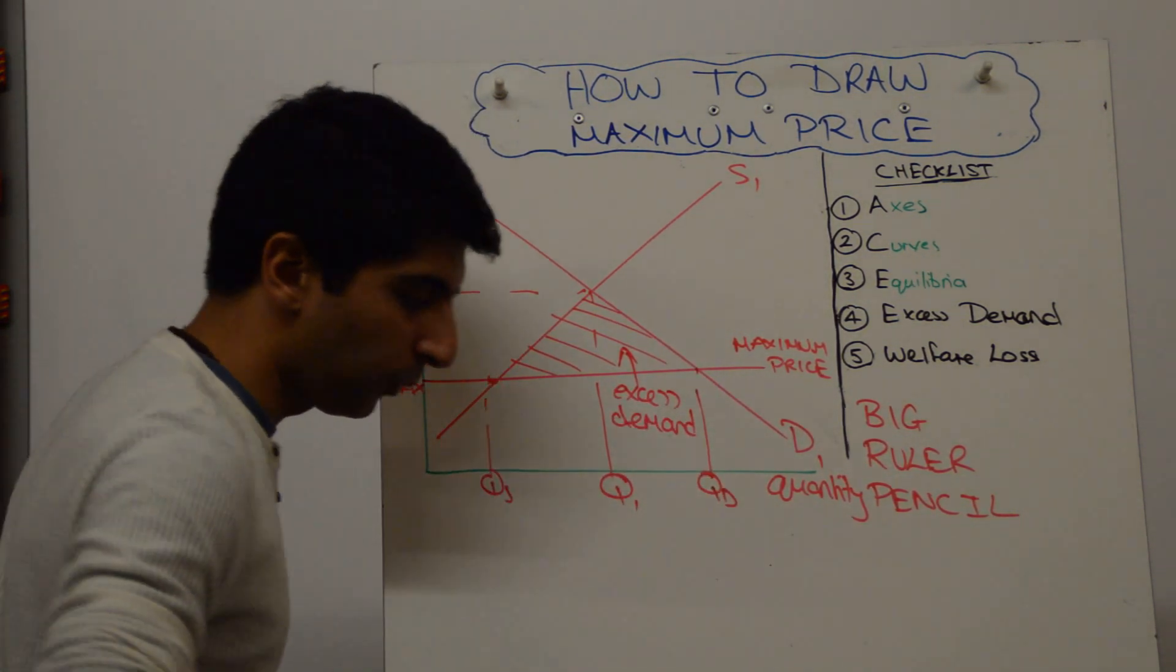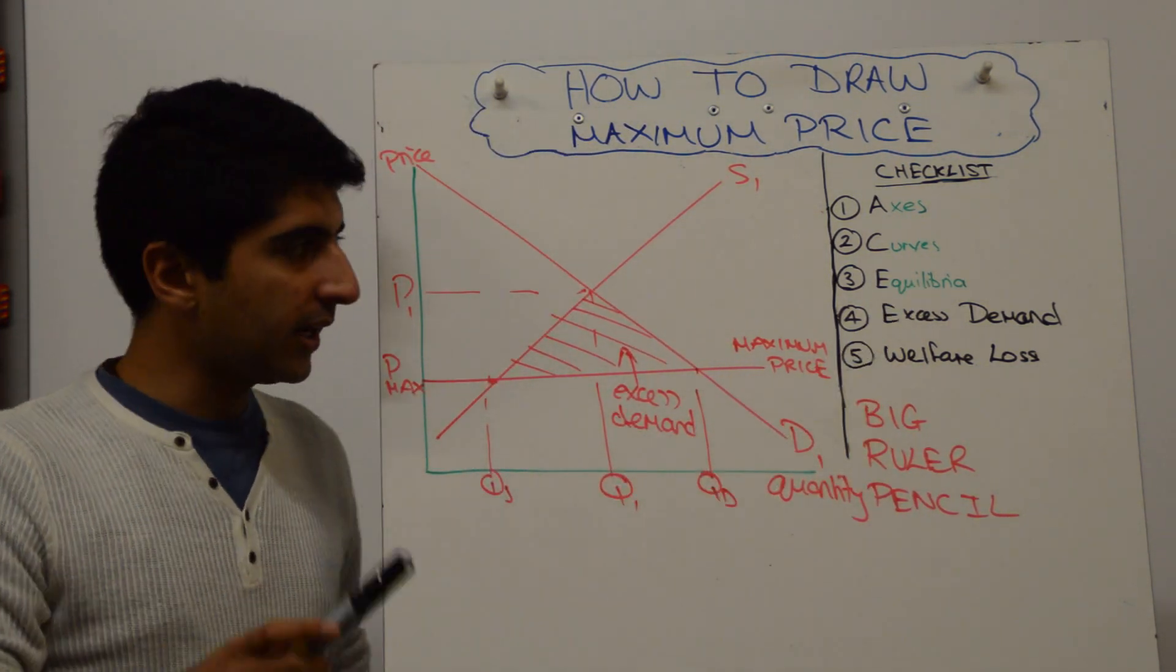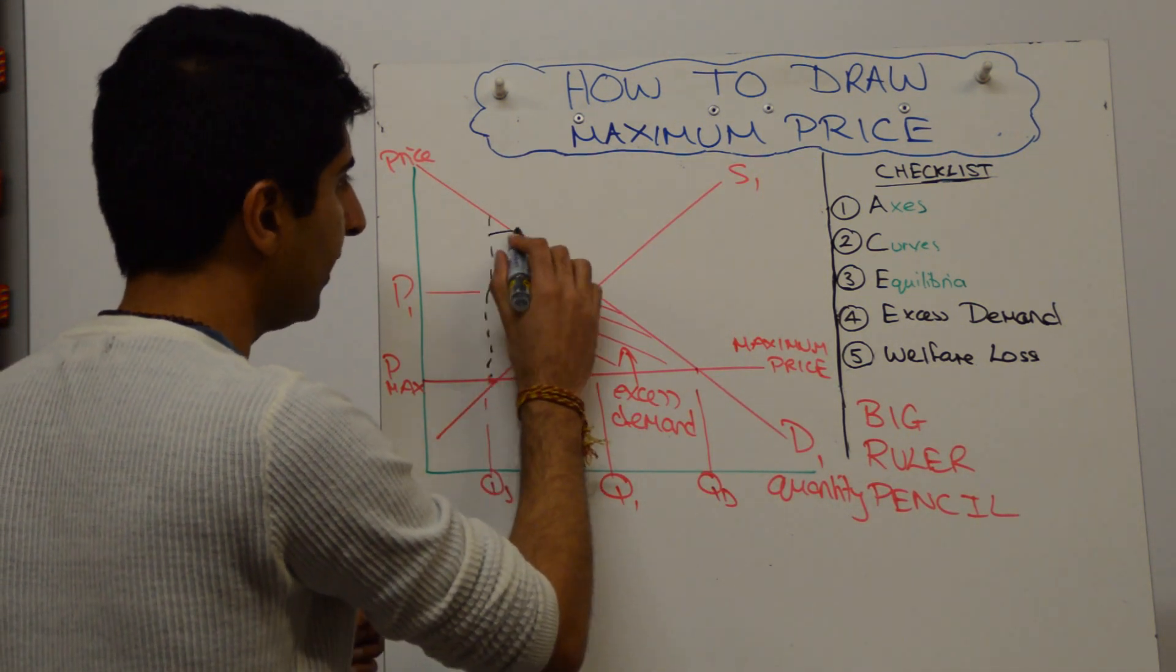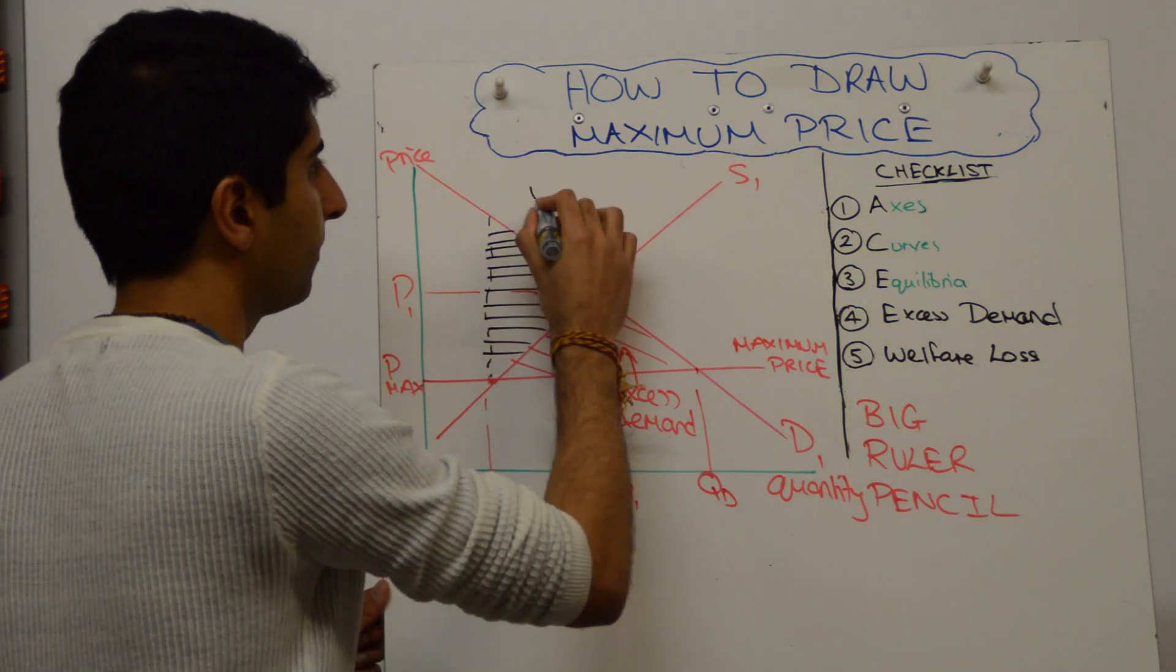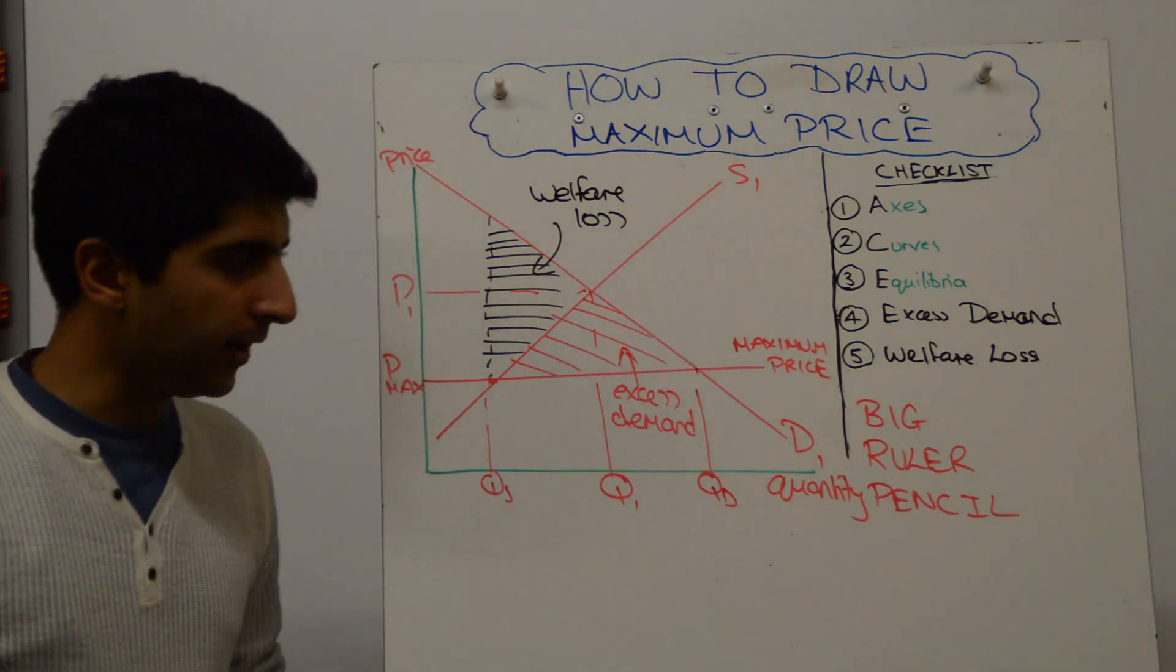And the last thing we want to show is the welfare loss. So these are the two things that are important in your checklist to make sure that we're showing. And that welfare loss is exactly as it was, the same triangle as it was for the minimum price. Make sure to label the welfare loss clearly.